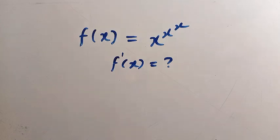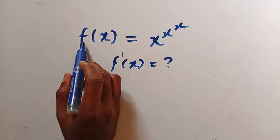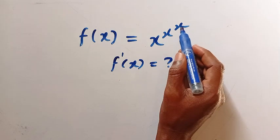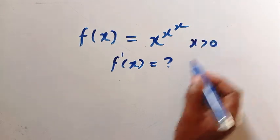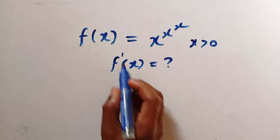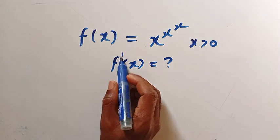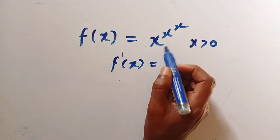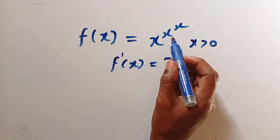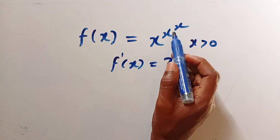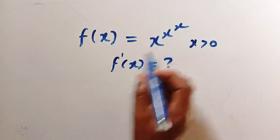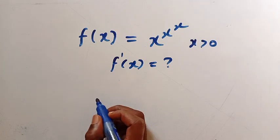Good day viewers, you are welcome. How to solve this nice function: f of x equals x to the power of x to the power of x, where x is greater than zero. We are expected to find f prime of x, that is the derivative. Looking at this, it is a power tower of height 3 — we have x power x power x. How do you solve this problem? Drop the answer in the comment box before I solve it.